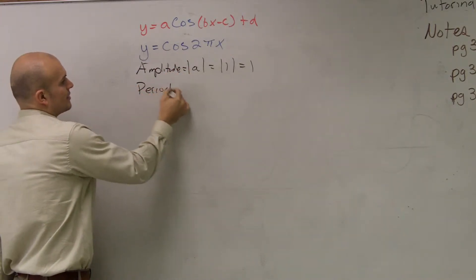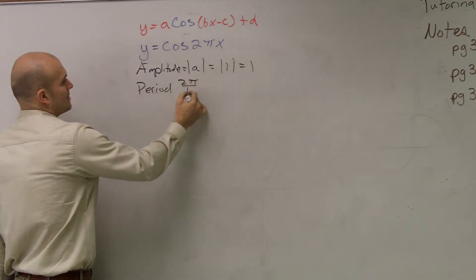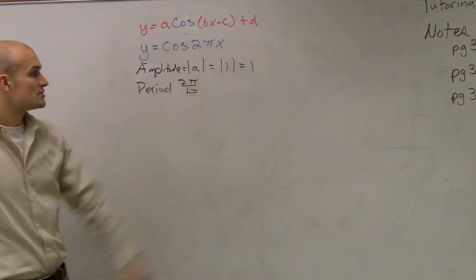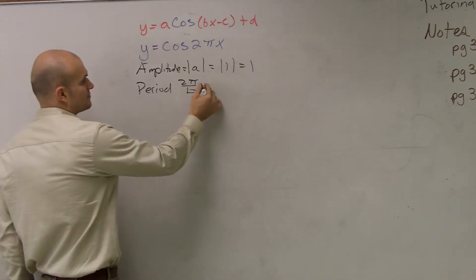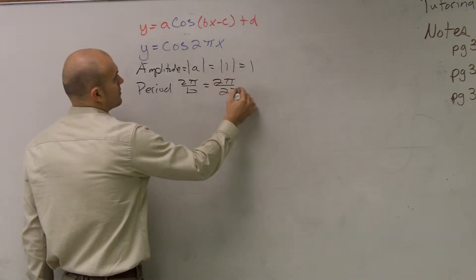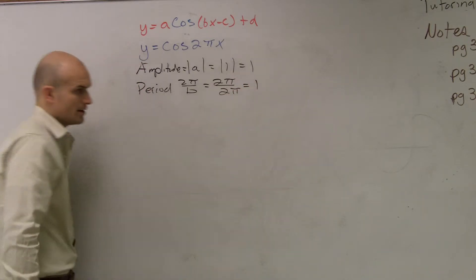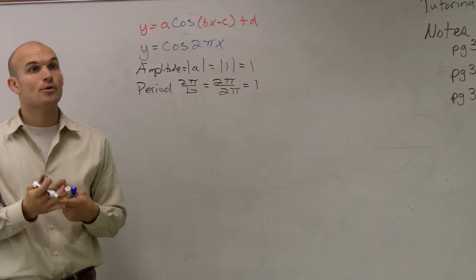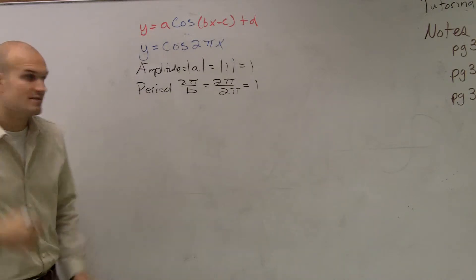The period is 2 pi over B. Remember, B is the number that's in front, so we're going to have 2 pi over 2 pi, which is equal to 1. Then, remember, we always want to find our four important points. So our four important points are your period divided by 4.